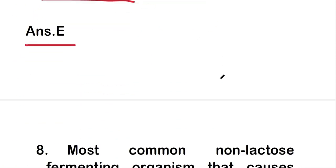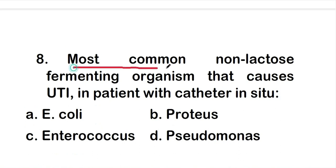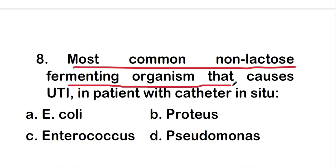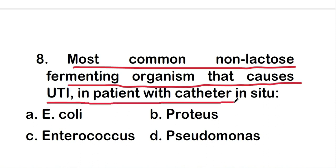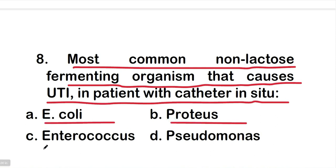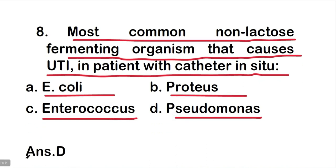Question 8: What is the most common non-lactose fermenting organism that causes UTI in a patient with a catheter in situ? The options are E. coli, Proteus, Enterococcus, or Pseudomonas. The right answer is option D: Pseudomonas. Pseudomonas is the most common non-lactose fermenting organism that causes UTI in patients with a catheter in situ.